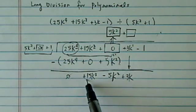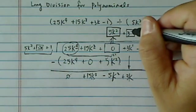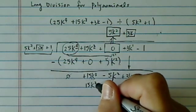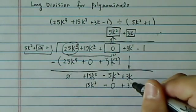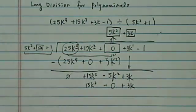Next thing I'm going to be matching this leading term, which of course I need a 3k. So I have a 15k cubed, I'm missing a term here, and then plus 3k. I'm going to do my subtraction over here.